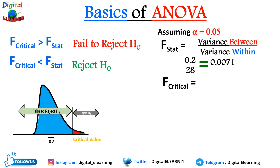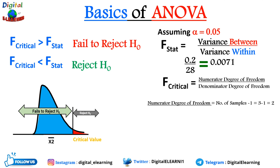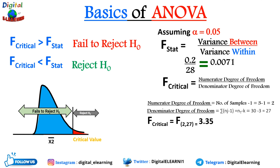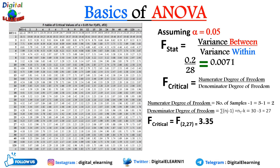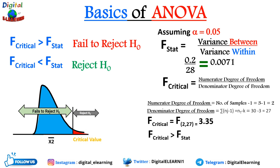The numerator degrees of freedom is number of samples minus one: 3 − 1 = 2. The denominator degrees of freedom is total number of values minus three: 30 − 3 = 27. Looking up F(2, 27) in the F-table, we get a critical value of 3.35. Since F-critical (3.35) is greater than F-stat (0.0071), we fail to reject the null hypothesis.